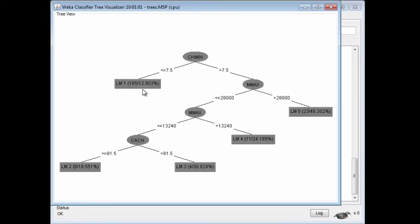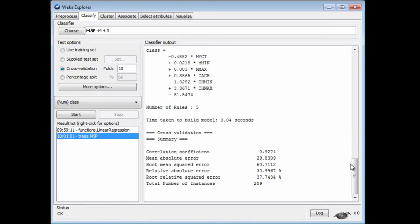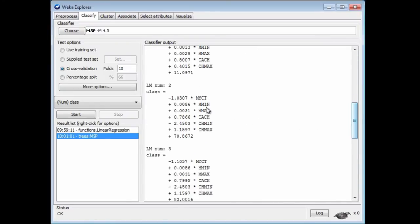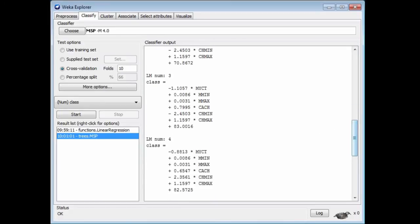You can see that each of these, in this case five leaves, has got a linear model: LM1, LM2, LM3. If we look back here, the linear models are defined like this. LM1 has got a formula, this linear formula for LM1, this linear formula for LM2, and so on.